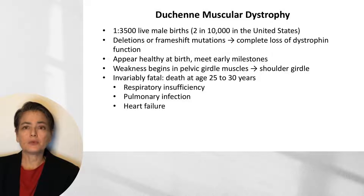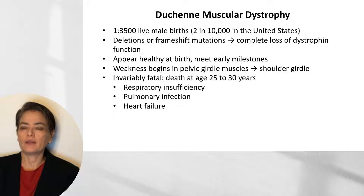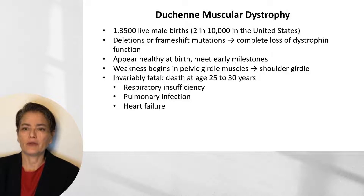These children will appear healthy at birth and meet their early milestones, though they may have some delay in walking. Weakness begins first in the pelvic girdle muscles and progresses over time to the shoulder girdle. The disease is relentlessly progressive and invariably fatal, with death typically occurring at 25 to 30 years of age due to respiratory insufficiency, pulmonary infection, or heart failure.